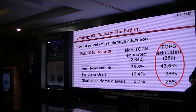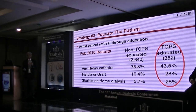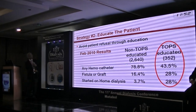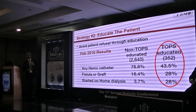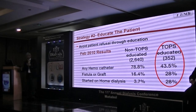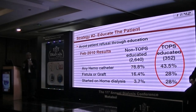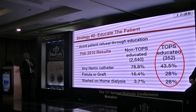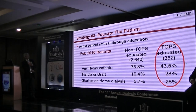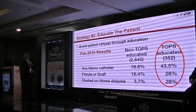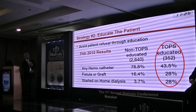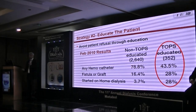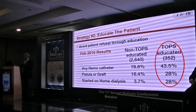Strategy two is educating the patient — the person whose life is most affected. If you teach patients well, outcomes improve. There is a program called the TOPS program — Treatment Options Program — done by Fresenius. They enrolled CKD stage 4 patients and taught them what to expect as kidney function declines. Patients trained with TOPS had much lower catheter rates: 43% versus 79% in untrained patients. Fistula and graft rates were higher at dialysis start, and more patients chose home therapies like peritoneal dialysis and home hemodialysis.